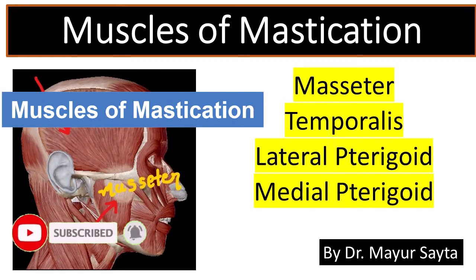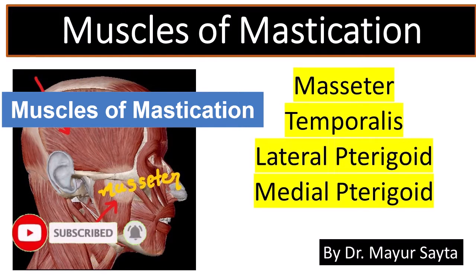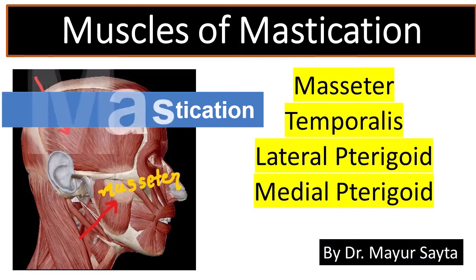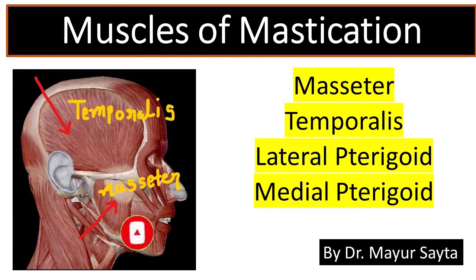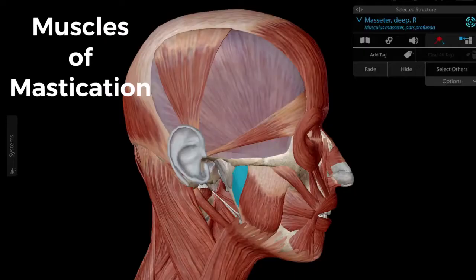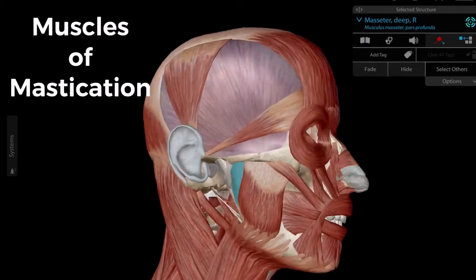Hello friends, in this video we are going to discuss the muscles of mastication. Mastication means to chew, and we will discuss the four main muscles related to the mastication process — their origin, insertion, nerve supply, as well as their action. Let's begin with the masseter muscle.